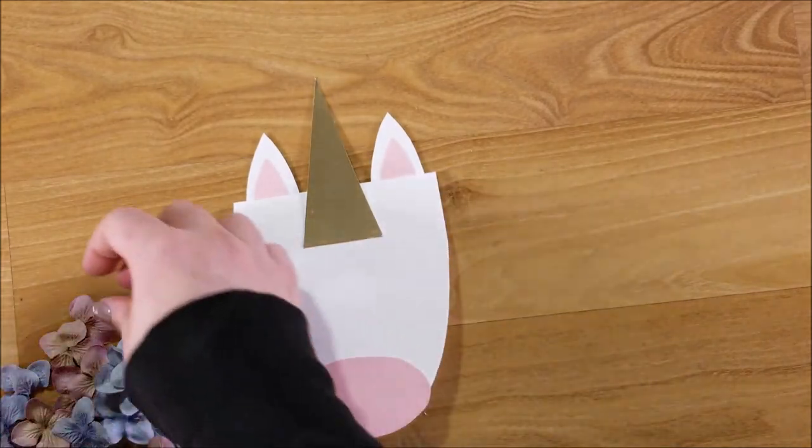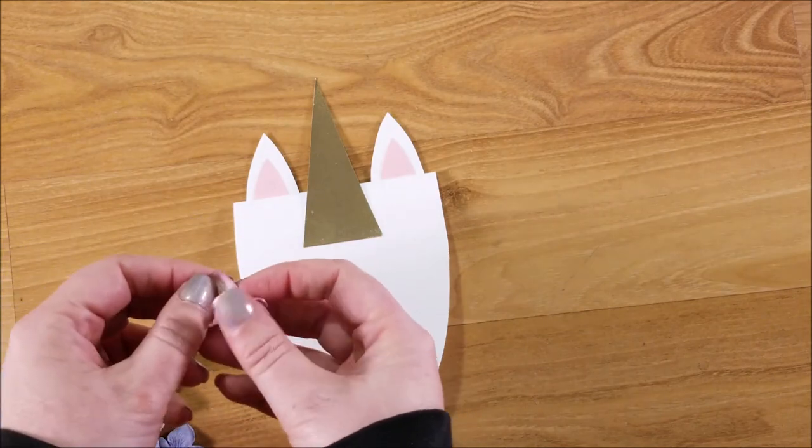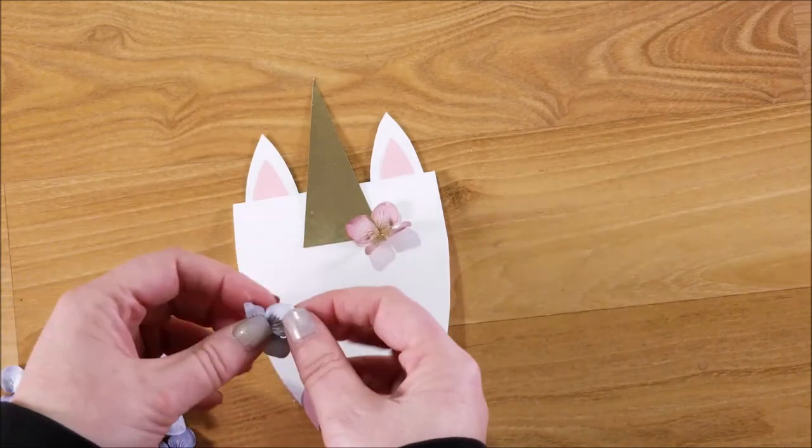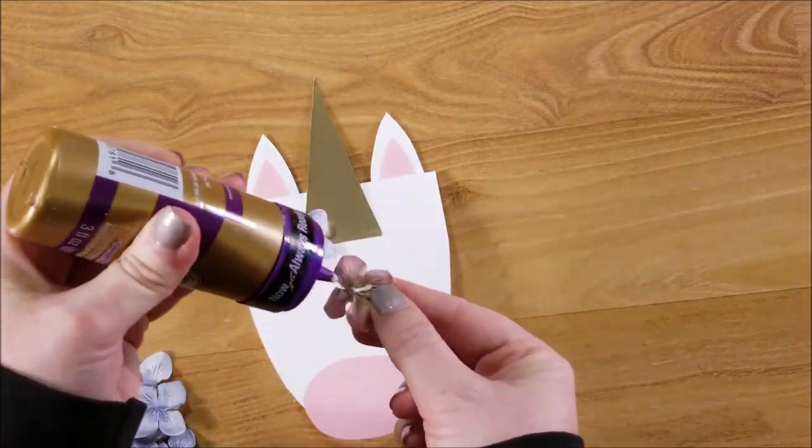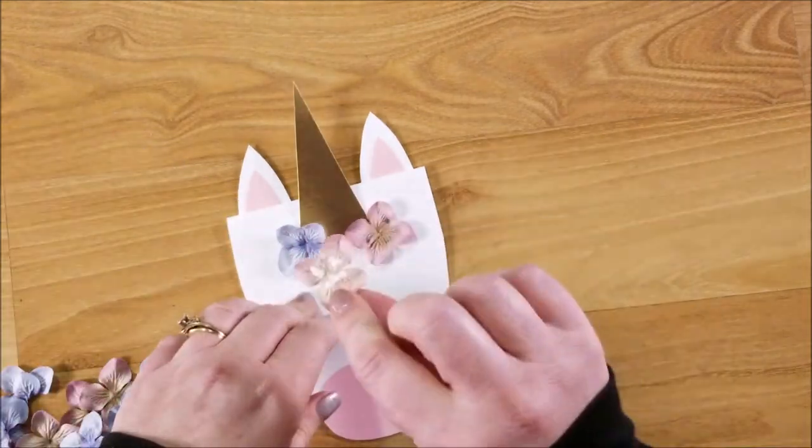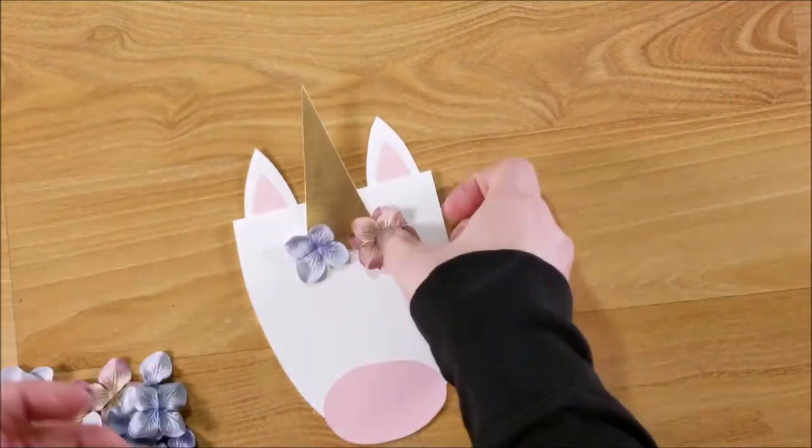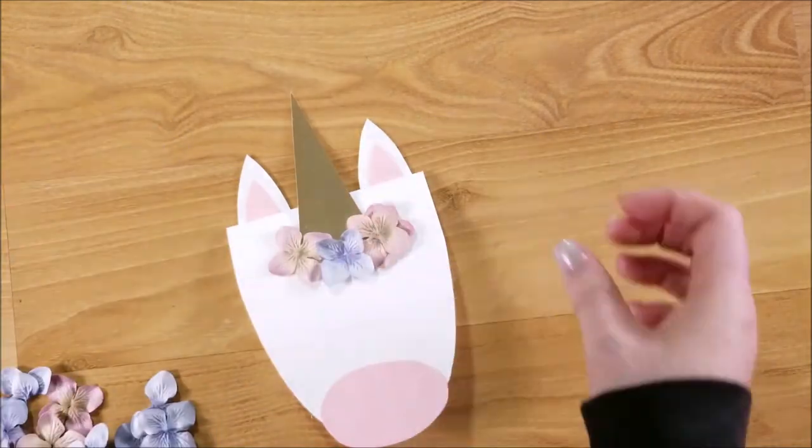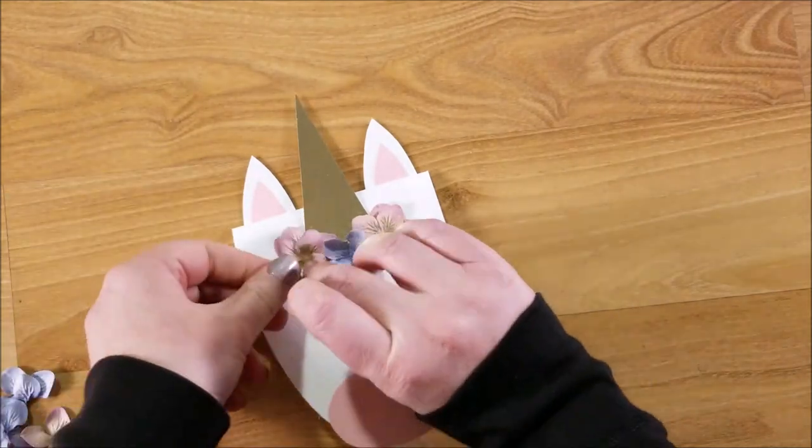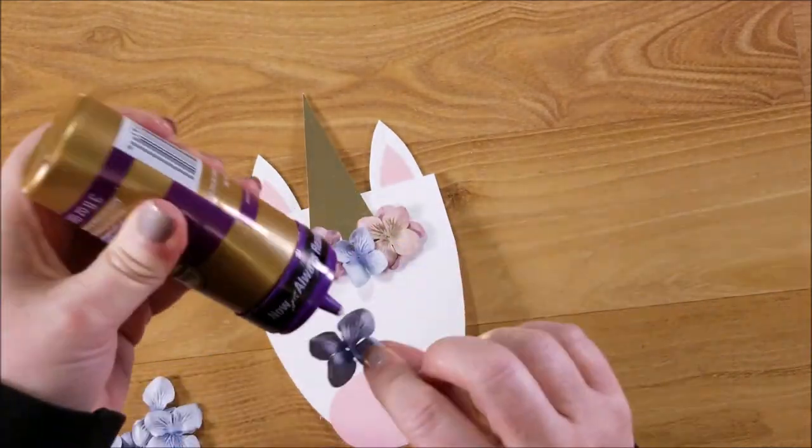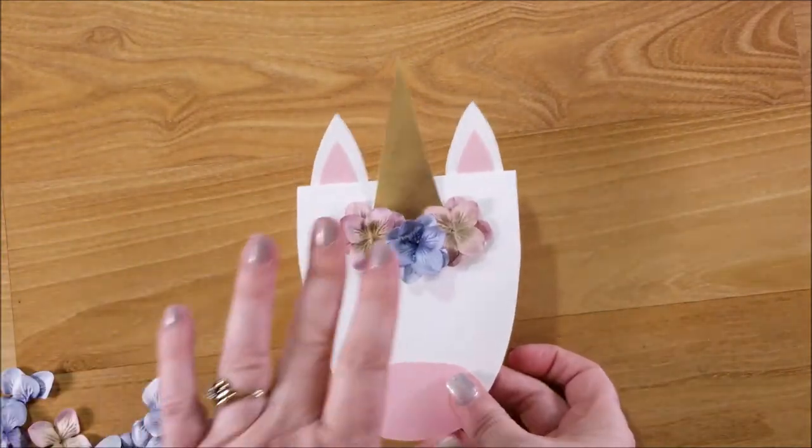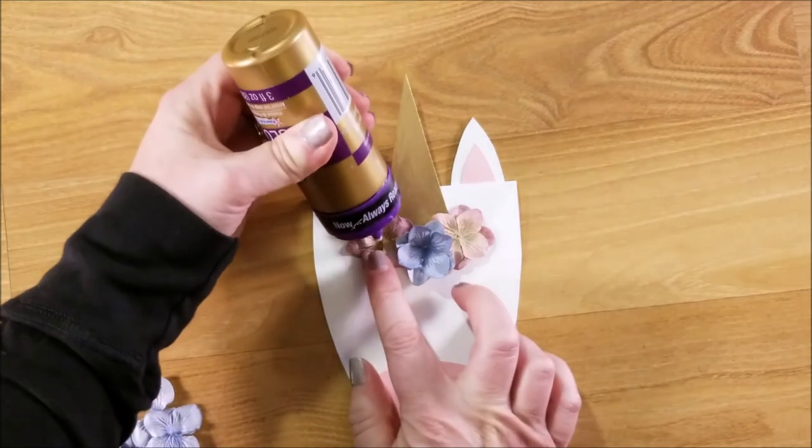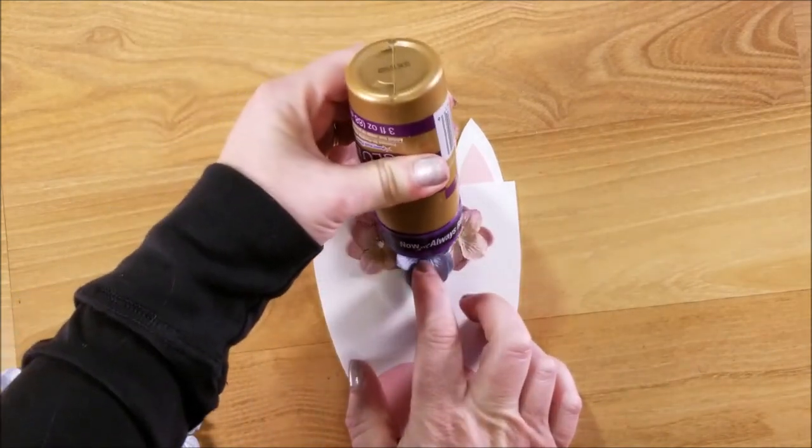And then you're going to arrange your flowers the way that you want them, all along the top of the horn, covering up the bottom of the horn. I'm going to add some rhinestones to the centers, so I'm going to add a dab of glue to each spot there.